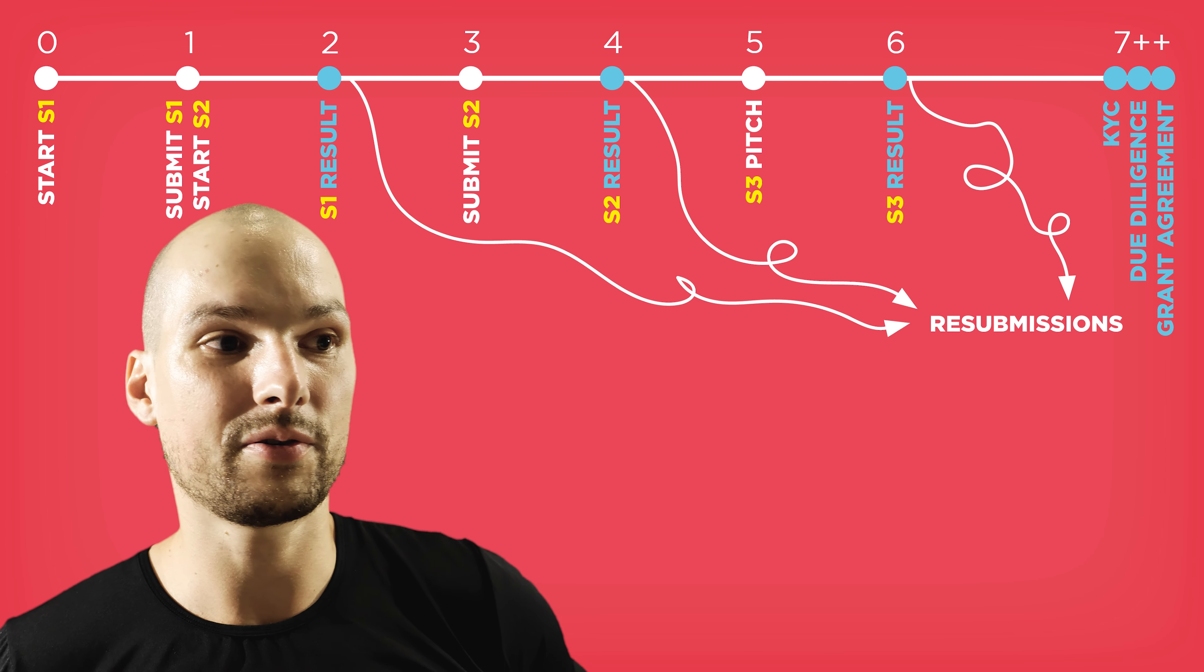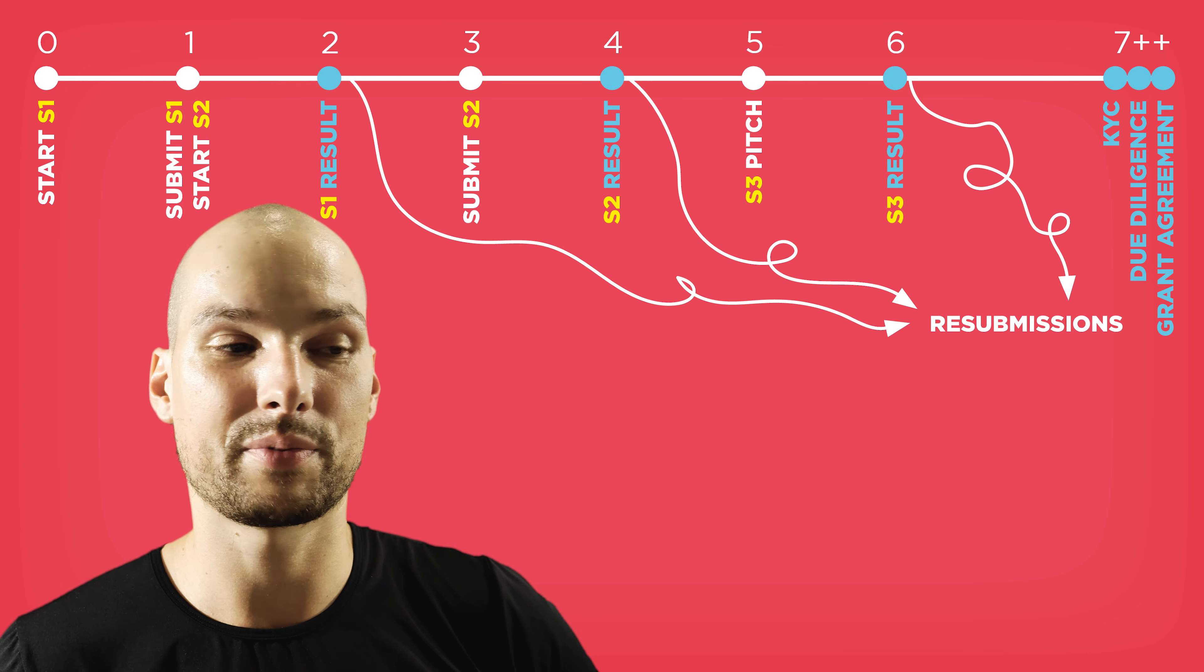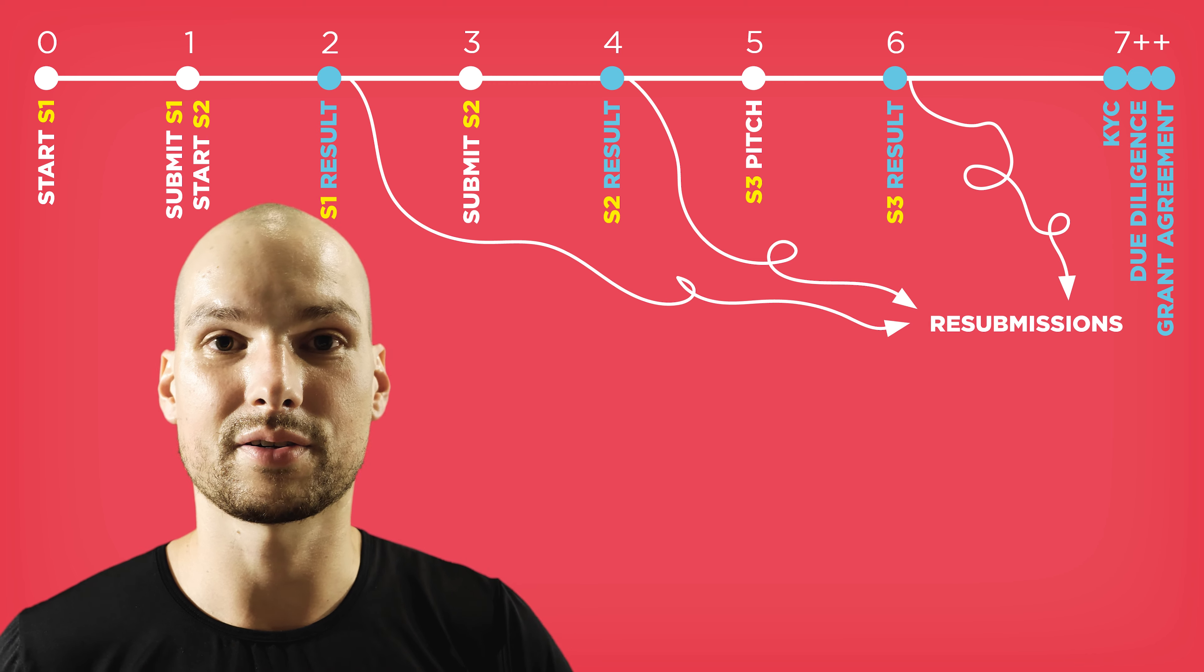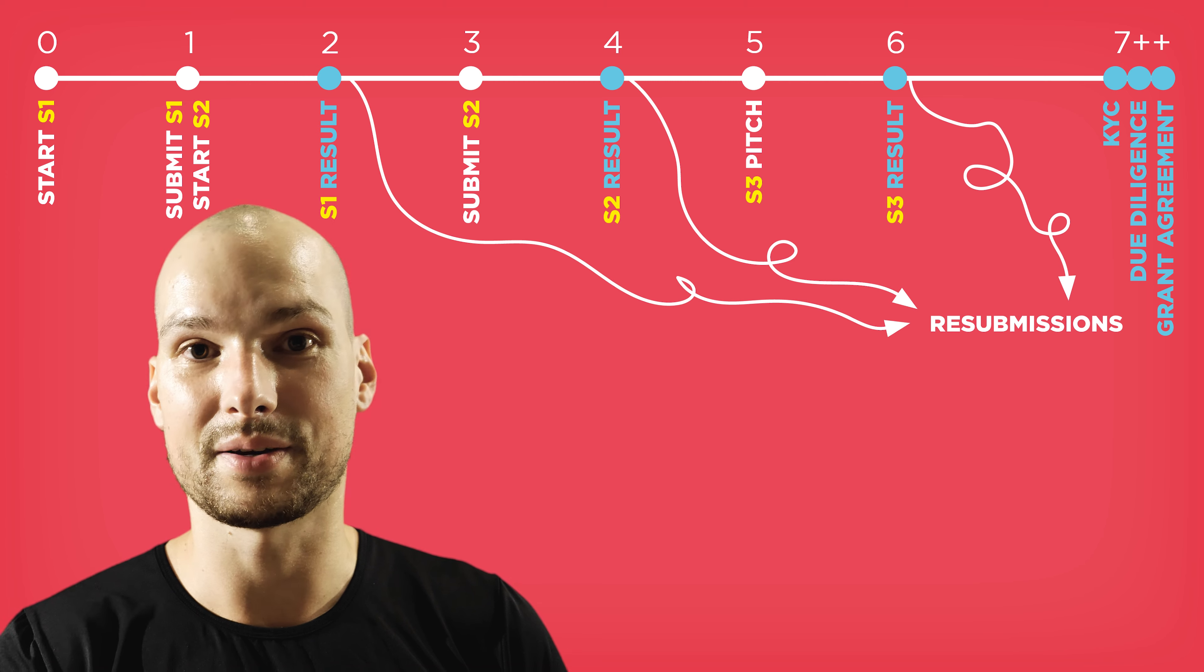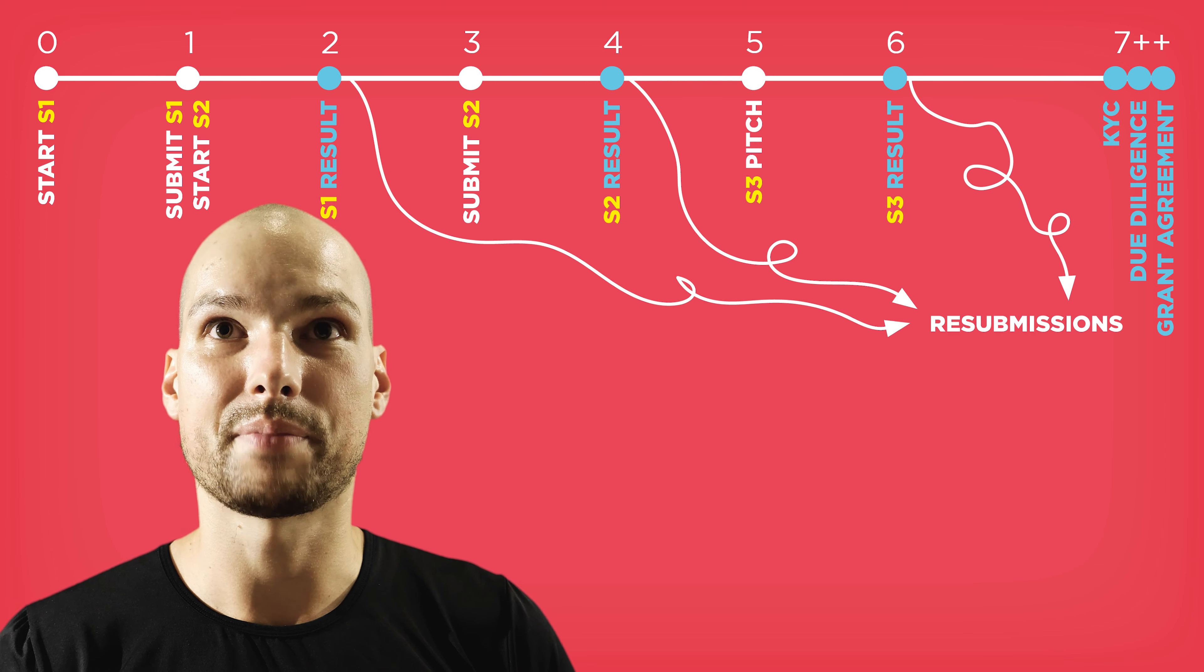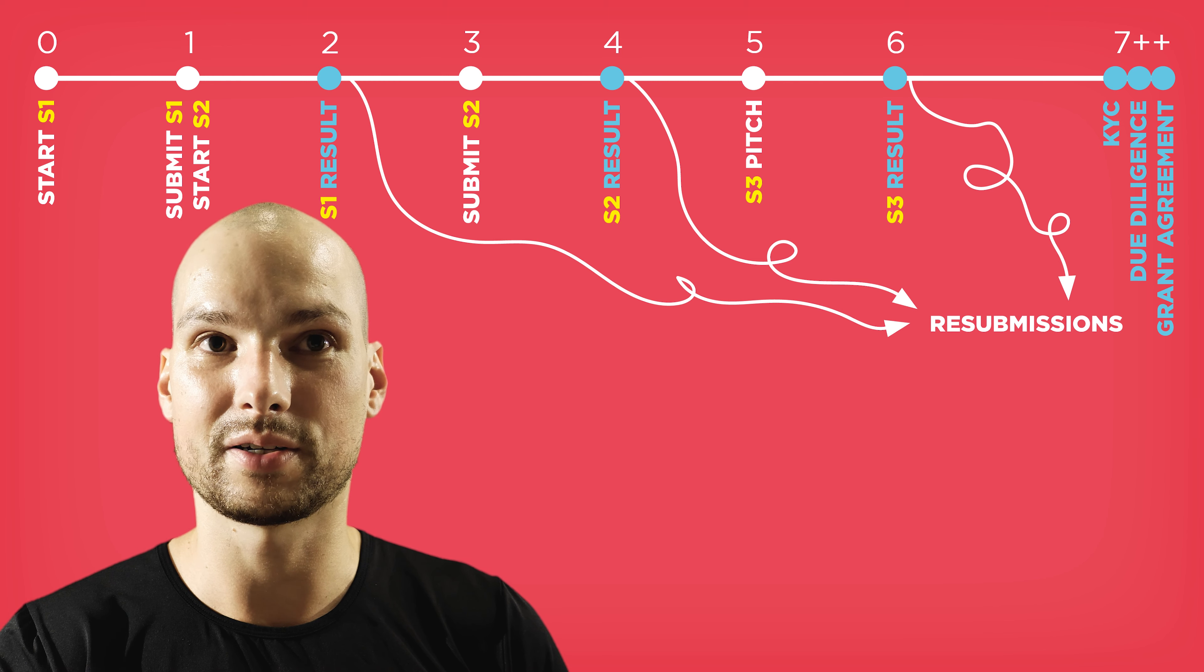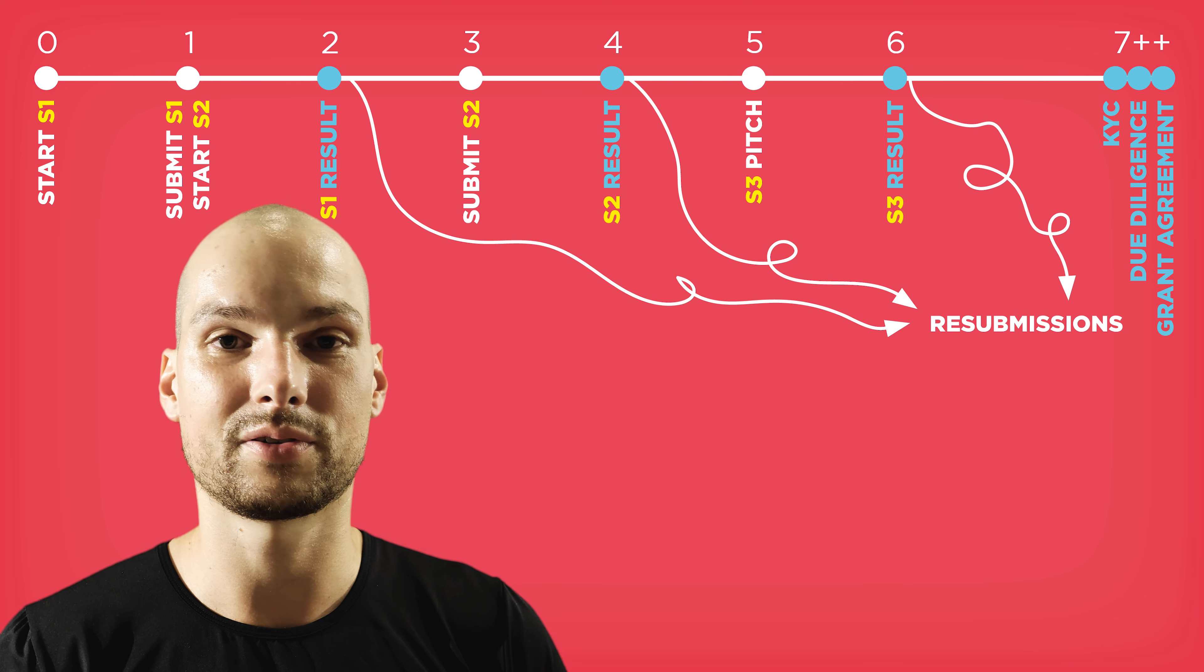let's say we start in month zero. So this would be step one of the EIC Accelerator. It takes about one month to prepare the application. It can be done faster, but it's usually good to take your time because obviously you are not just writing the step one application, but you're already planning the step two application, which is going to take a lot of input from step one, but also the evaluation obtained in step one by the evaluators is obviously going to stick to the project for the entire timeline. So it's good to take your time.